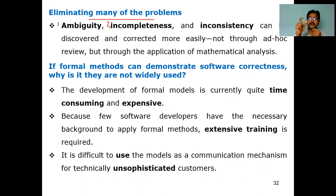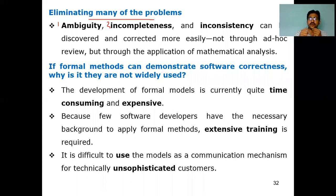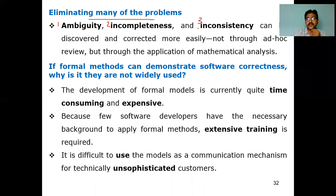In mathematics you derive the total problem step by step and arrive at a final solution — you don't drop midway. For example, (a + b)² is derived fully as a² + 2ab + b², not left incomplete. This mathematical completeness resolves incompleteness problems. The third problem is inconsistency — meaning a lack of clarity in requirements — which is also rectified by formal methods.